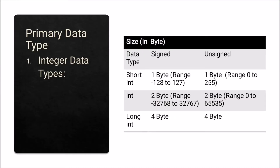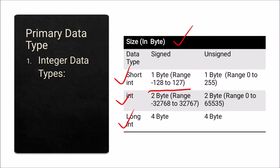The range of signed and unsigned numbers differs, and size here is specified in bytes. There are three integer data types: short integer, integer, and long integer. For short integer, you can store up to 1 byte; signed range is minus 128 to 127, and for unsigned the range is 0 to 255.